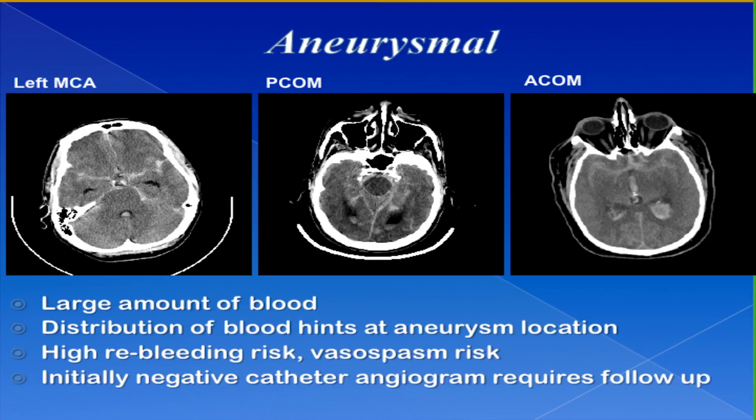Here you see one with quite a bit of blood anteriorly, maybe a bit more in the left sylvian fissure — this was a left middle cerebral artery aneurysm that ruptured. Here we have blood that's posteriorly located — this was a PCOM aneurysm. And here, blood mostly anteriorly located in the interhemispheric fissure — that was an anterior communicating artery aneurysm.